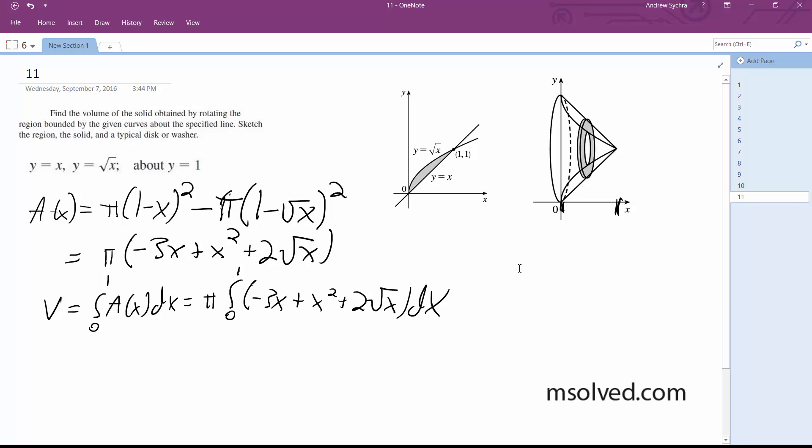After integrating this, from 0 to 1, we get pi times negative 3 halves plus 5 thirds, which finally gives us pi over 6. And that's it.